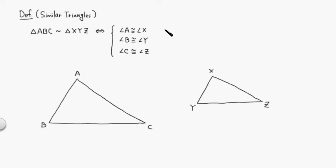And also, all the ratio of corresponding sides is a constant. So AB equals K times XY, and BC equals some constant K times YZ, and AC is K times XZ.